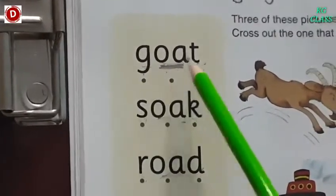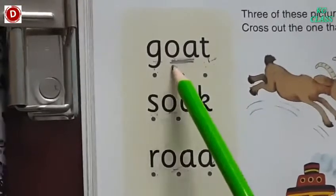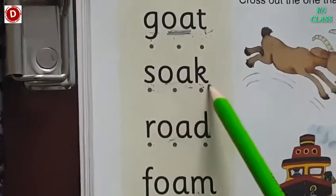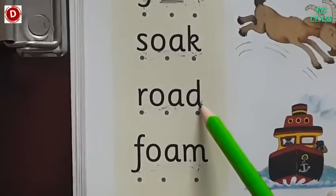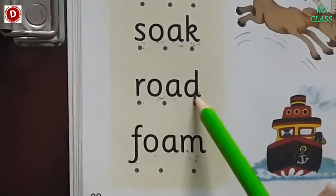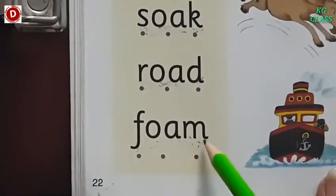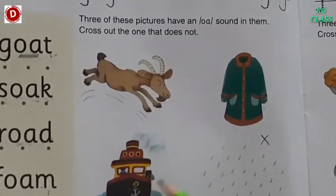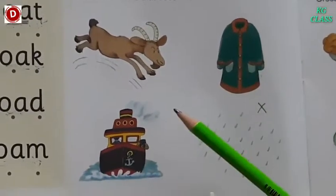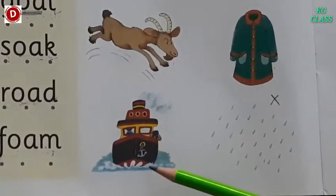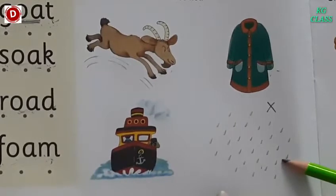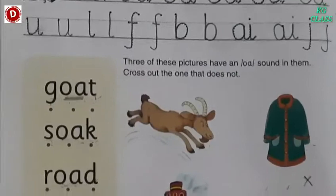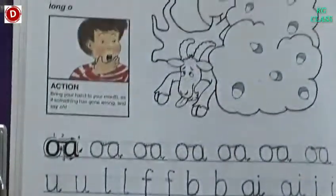Now let's read these words with the O sound. G-oa-t, goat — goat means bakri. S-oa-k, soak — soak means bhigona. R-oa-d, road — road means sadak. F-oa-m, foam — foam means jhaag. Now, three of these pictures have the O sound and one does not. This is a goat, this is a boat, this is a coat — and this is rain. Rain does not have the OA sound, so it is the odd one out. We have to cross it out. In this way you have to learn page number 22. You have to write it and learn the sound — long O.